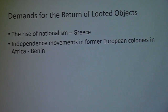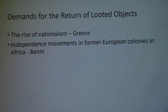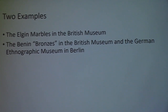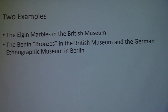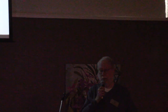The two things I want to talk about today are ones that get a lot of attention. First, the return of looted objects due to the rise of nationalism — and this is in Greece. The second is independence movements in former European colonies in Africa — and that's Benin. The two examples are the Elgin Marbles in the British Museum, and a group of objects referred to as the Benin bronzes, held in large part by the British Museum, the German Ethnographic Museum in Berlin, and other places including the Seattle Art Museum.